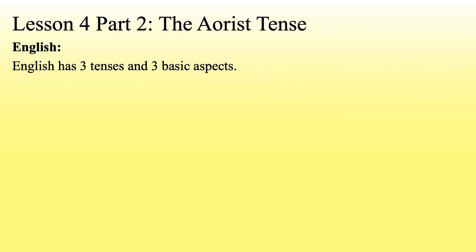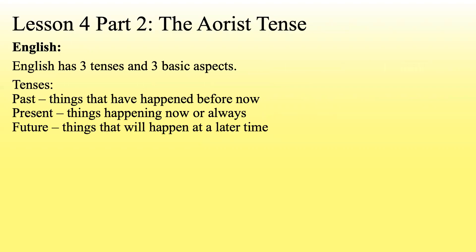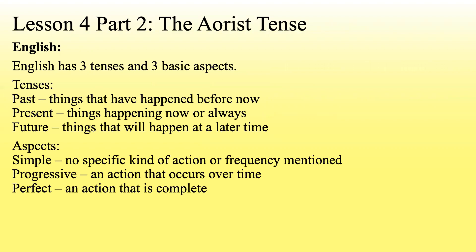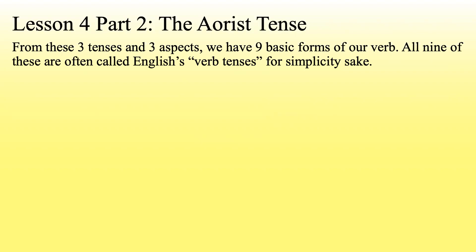In English we have three tenses and three basic aspects. We have past, present, and future — past are things that have happened before now, present things happening now, and future things that will happen at a later time. For aspects we have: simple — no specific kind of action or frequency mentioned, used with the future; progressive — an action that occurs over time, used with the present and imperfect; and perfect — an action that is completed.